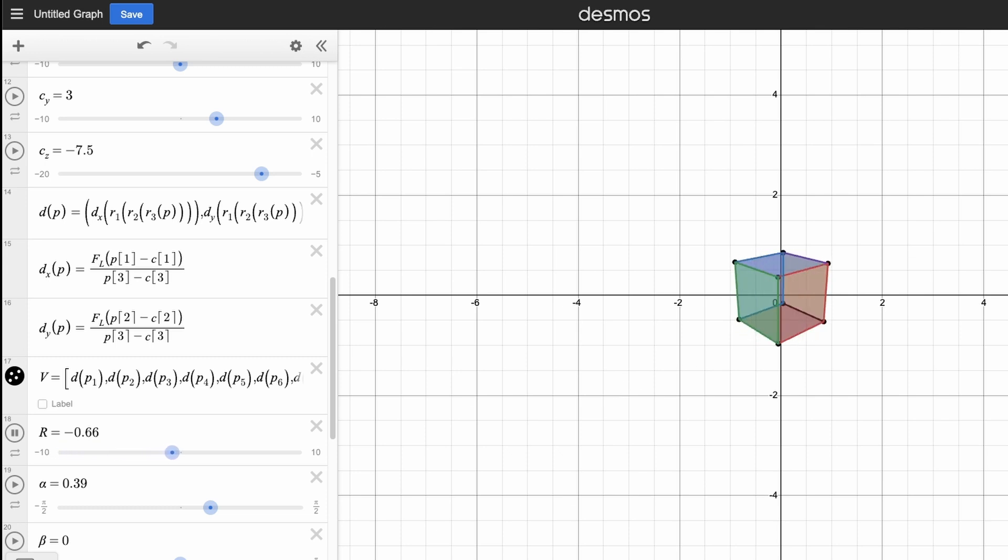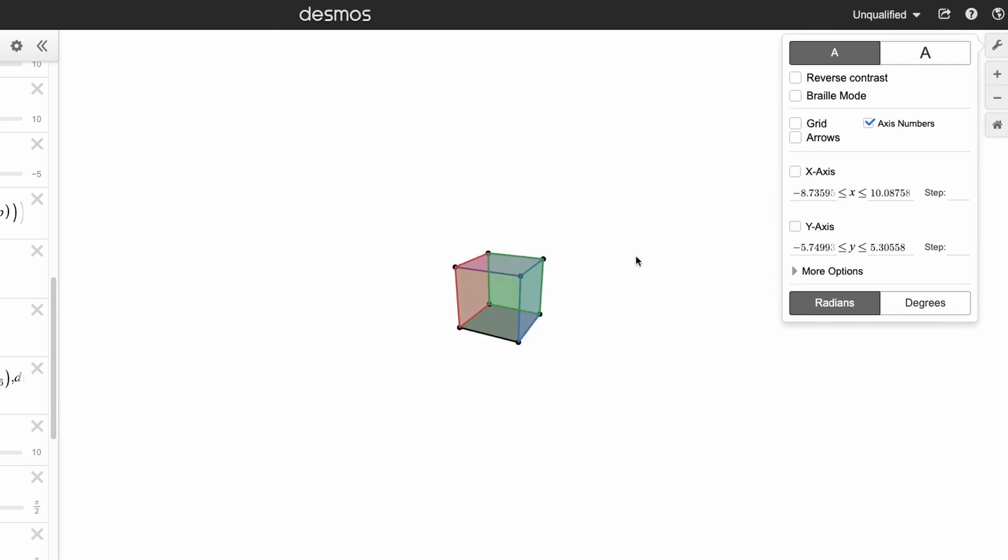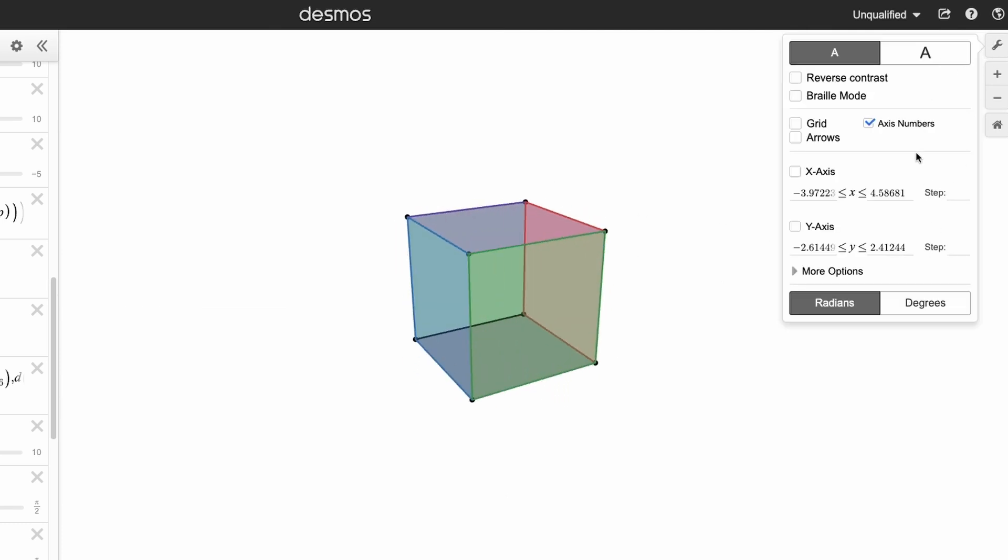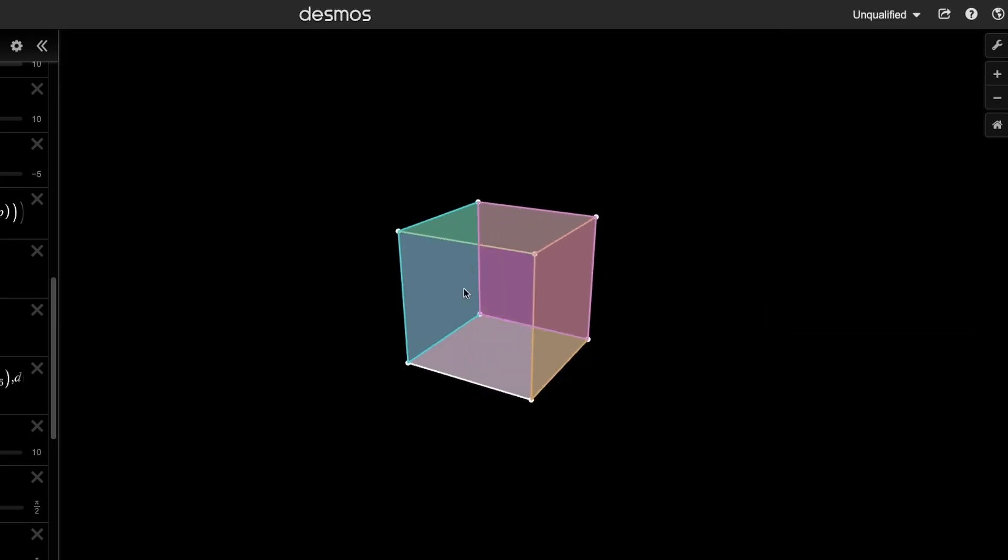So let's stylise this. If you go into the settings up at the top, then you can take the grid off. You can take the axes off. And now we've got just the cube by itself. And if you like, you can also do reverse contrast, which turns it into dark mode. Makes it like a nice little disco cube.